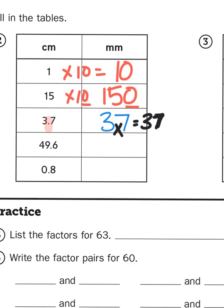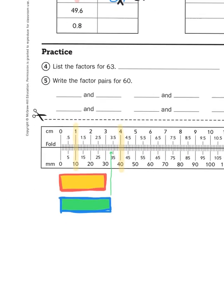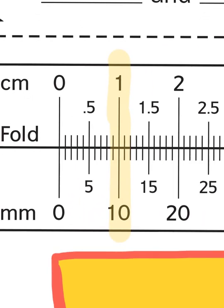Same would be true for 49.6. I would just move that decimal point 1 over. And I would take 8 tenths of a centimeter. If you think about where it would lie right here, 8 tenths of a centimeter is 8 millimeters. You see where that lies.